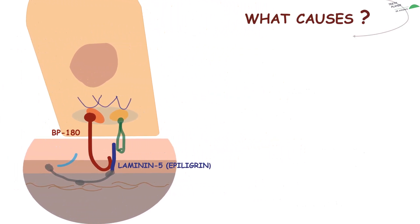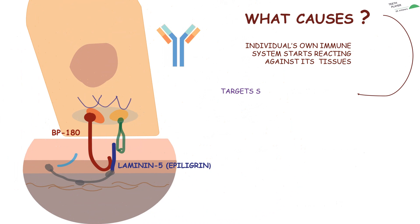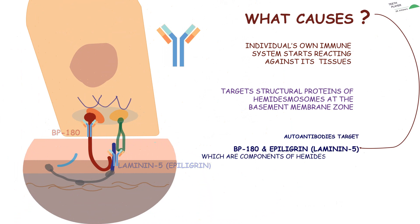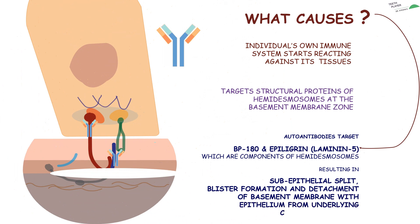Let's see what causes mucous membrane pemphigoid. The individual's own immune system starts reacting against its own tissues, targeting structural proteins of hemidesmosomes at the basement membrane zone. To clear off some concerns, definitive diagnostic tests are performed, including perilesional biopsy for light microscopy and perilesional biopsy for direct immunofluorescence.